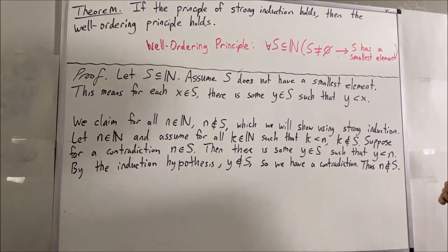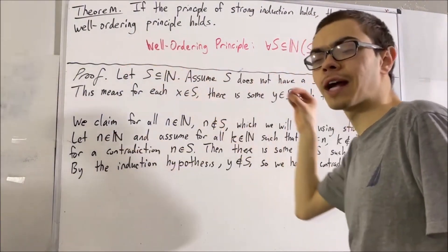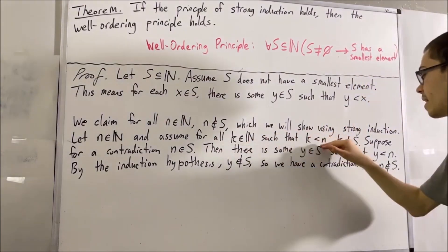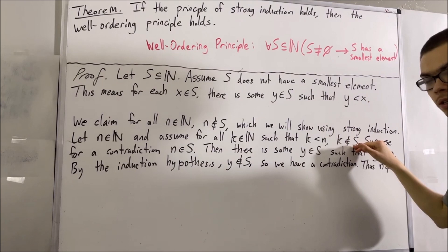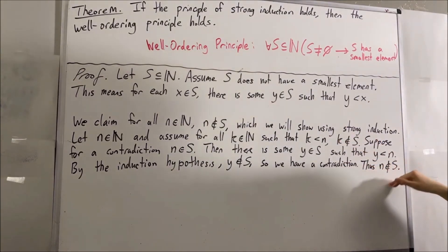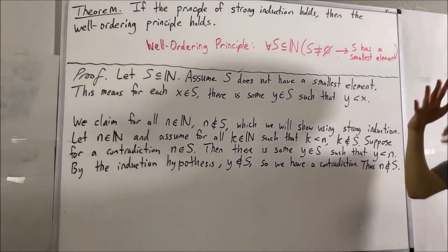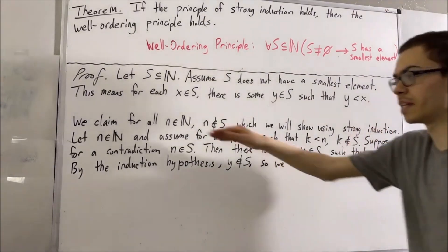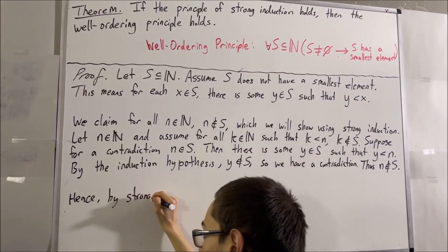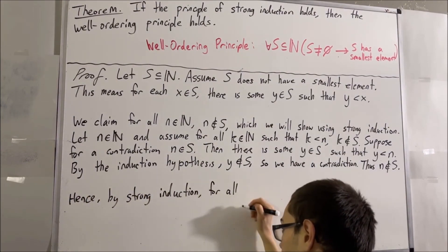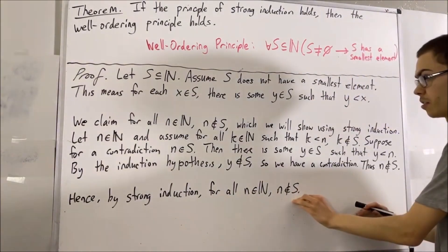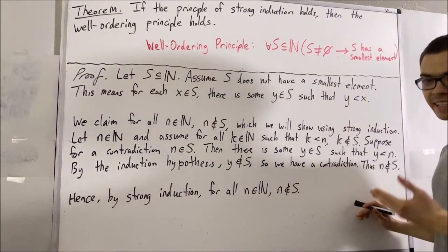Our assumption that N is an element of S led us to a contradiction, so we must instead have that N is not an element of S. We gave ourselves an arbitrary natural number N and assumed every natural number less than N is not an element of S, then showed N is also not an element of S. By strong induction, this tells us that for all natural numbers N, N is not an element of S. This statement tells us that S is empty.